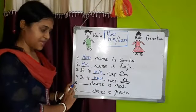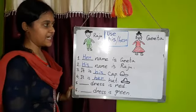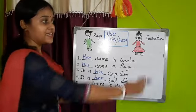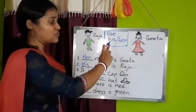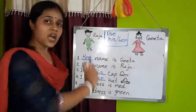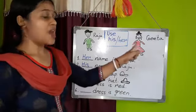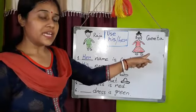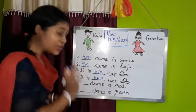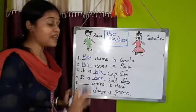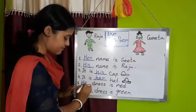Number five. Her dress is red. Whose dress is red? Geeta. Geeta's dress is red, so we have to use her. His or her? We use her. Geeta is a girl, so we use her. Her dress is red.